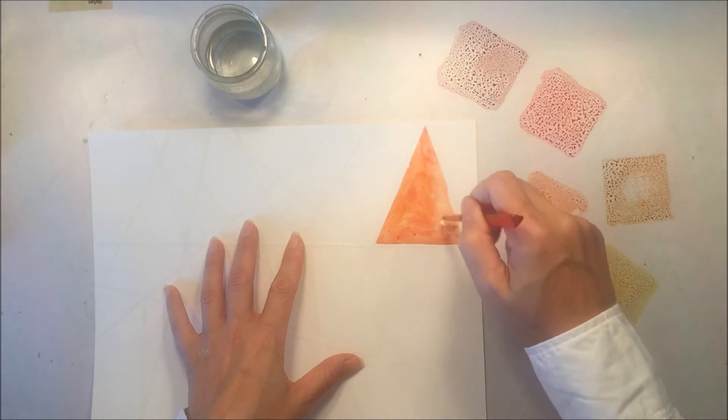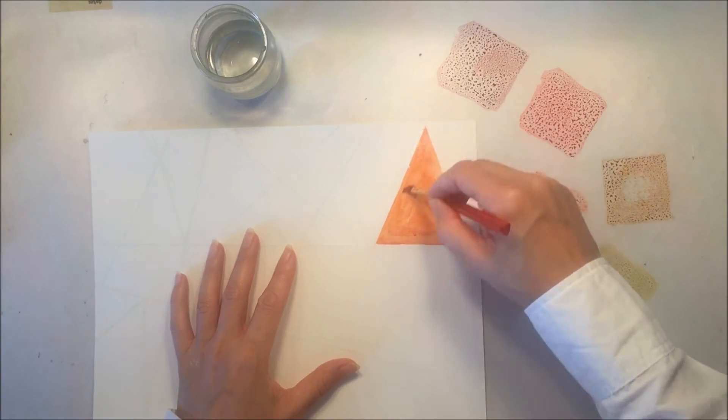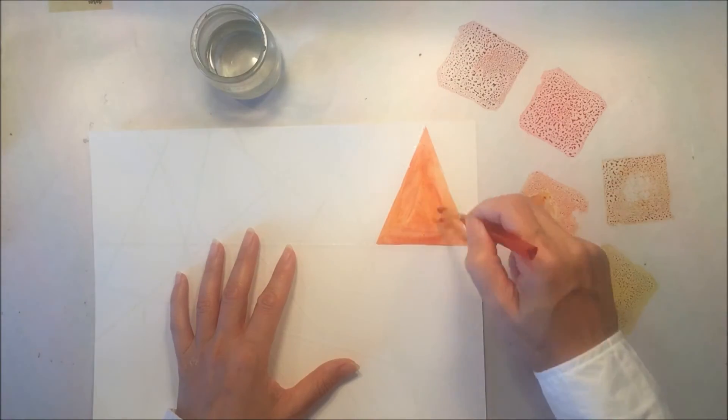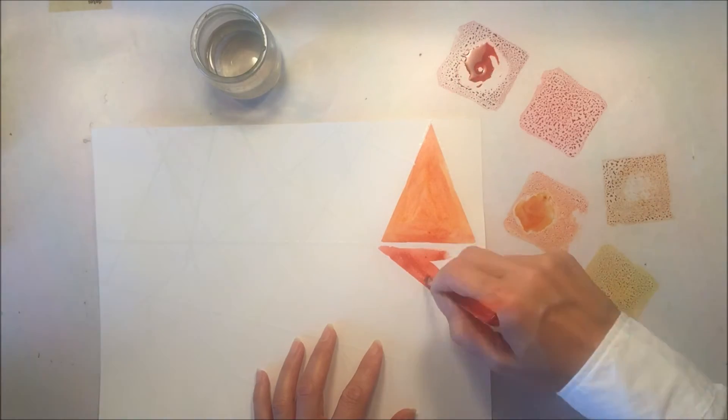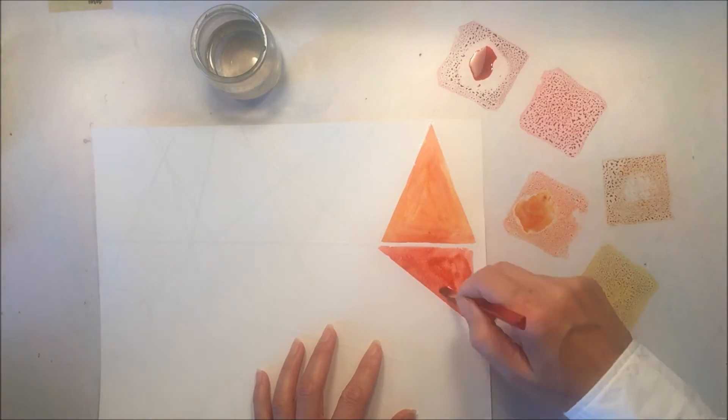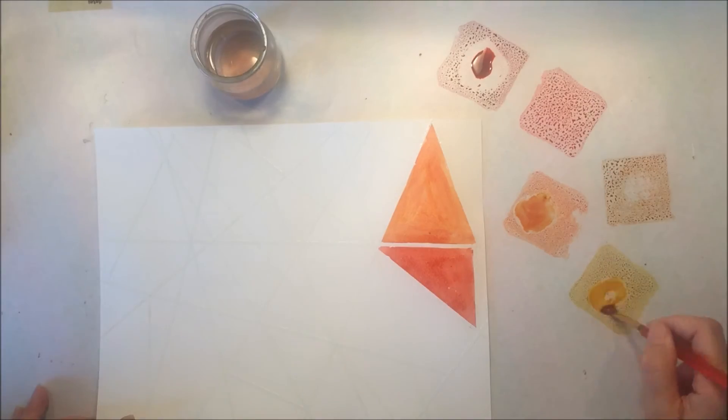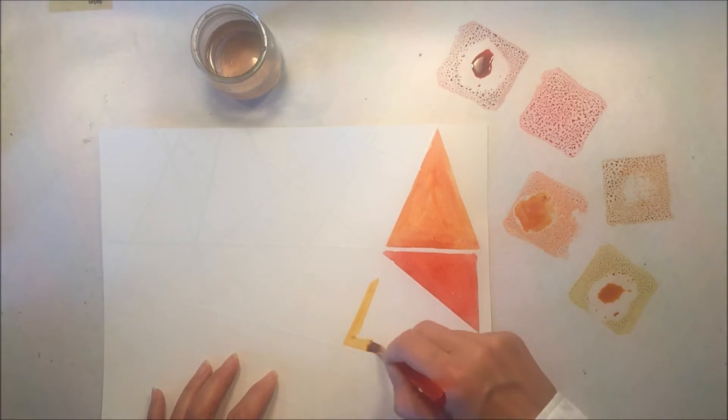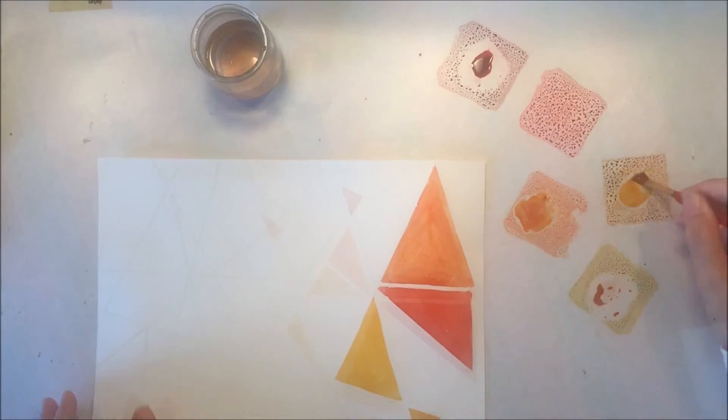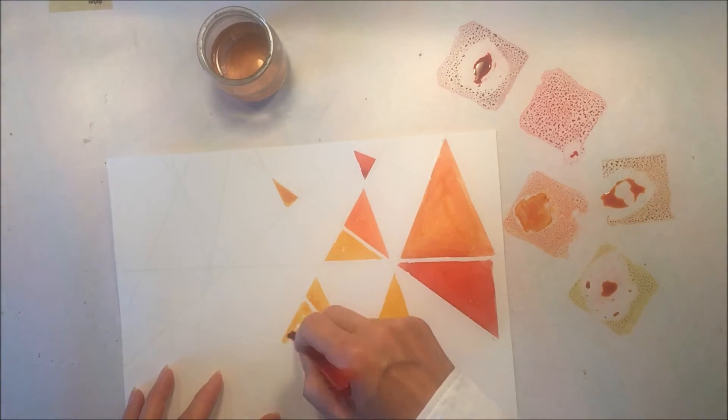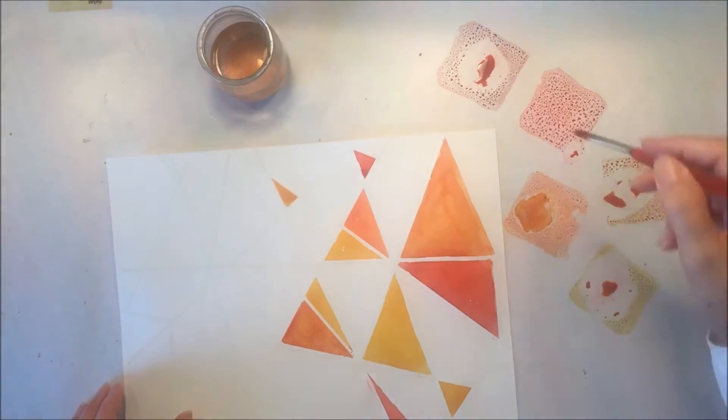I'm going to just start filling in these triangles. It's hard to see on camera, but there are quite a few of them that we've created with the embossing powder. What's nice is that none of the watercolor is going to seep into any of the other triangles, so I can continue working on this pretty quickly and it ends up being a very beautiful project.